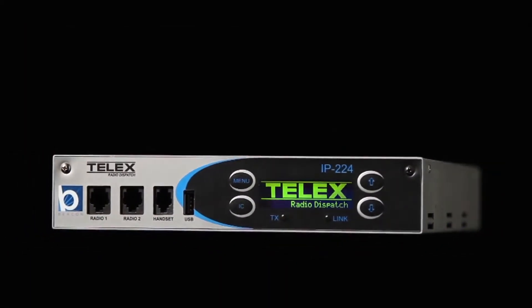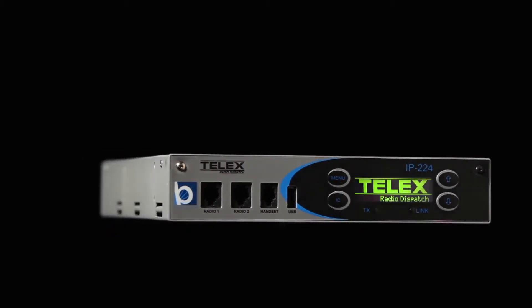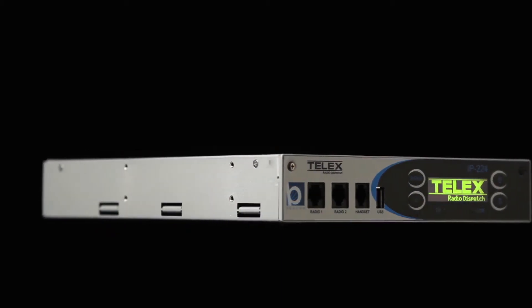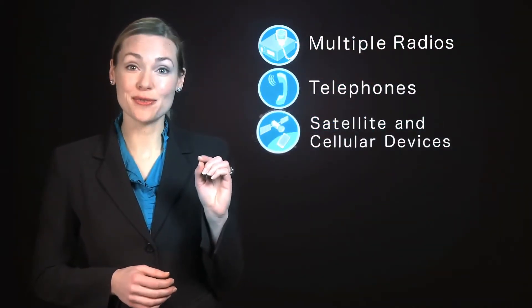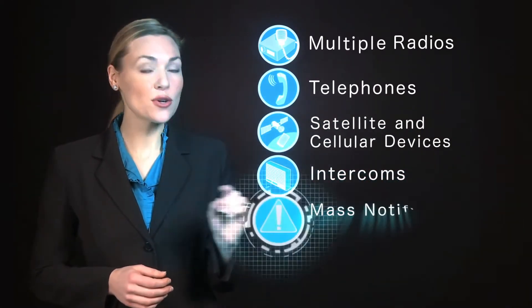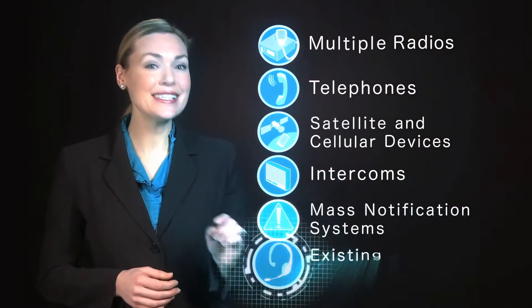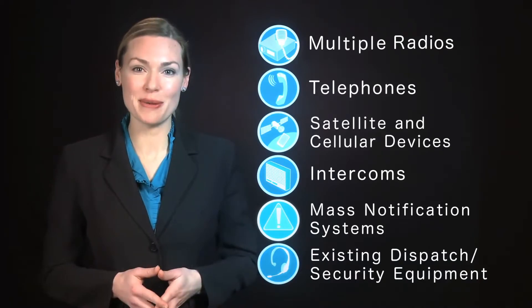Forming the heart of the Telex dispatch system, the IP224 allows the interfacing of multiple radios, telephones, satellite and cellular devices, intercoms, mass notification systems, existing dispatch and security equipment.